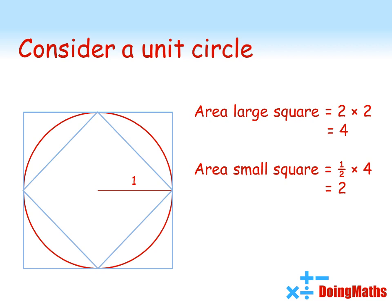Now you can see quite clearly that the area of the circle is bigger than the area of the small square but smaller than the area of the large square. So pi must be in between 2 and 4.